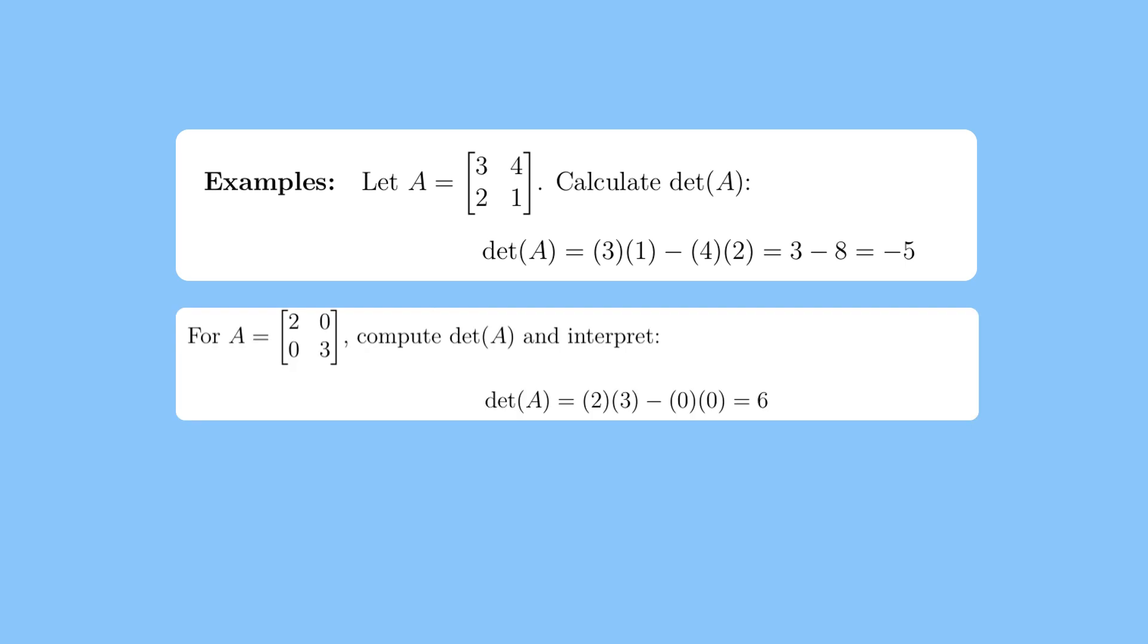As another example, consider a matrix with entries 2, 0, 0, and 3. The determinant is calculated as 2×3 - 0×0, which equals 6. Here, the determinant shows that the area is scaled by a factor of 6, and since the determinant is positive, there is no change in orientation.